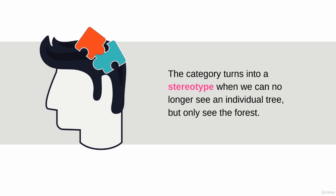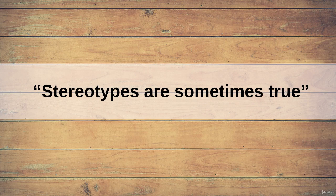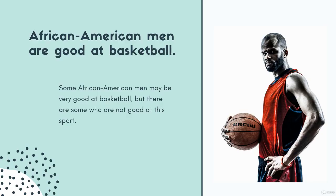Put another way, the category turns into a stereotype when we can no longer see an individual tree but only see the forest — when we assume that all trees within a forest are identical. That is when our category turns into a stereotype. A common defense is that stereotypes are sometimes true. Stereotypes, by their very definition, cannot be true. For example, think of the stereotype that all African-American men are good at basketball. Some African-American men may be very good at this sport,